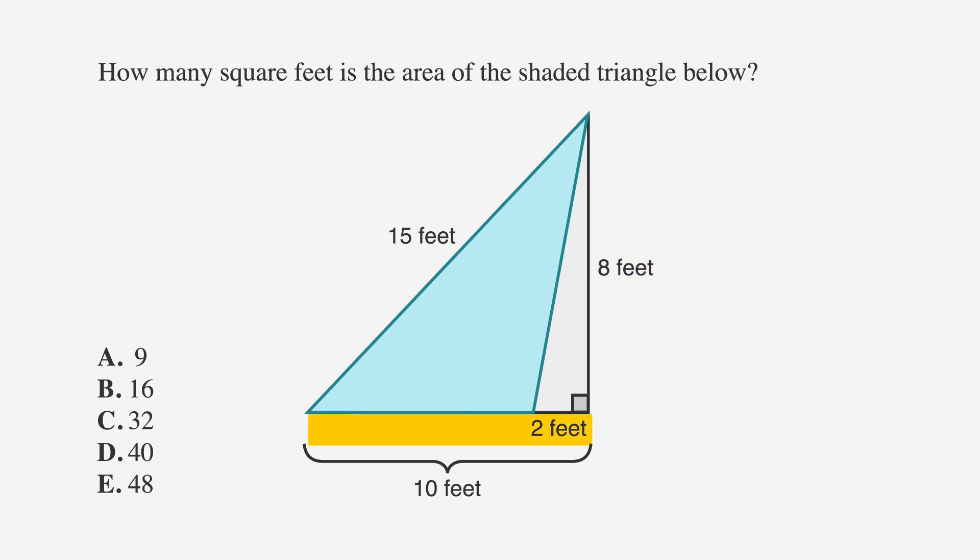First we need to find the base of the shaded triangle. That's easy. 10 minus 2 is 8. So we'll write that in. Now, using the formula area equals one-half base times height, we can find the area of the shaded triangle to be one-half times 8 times 8.